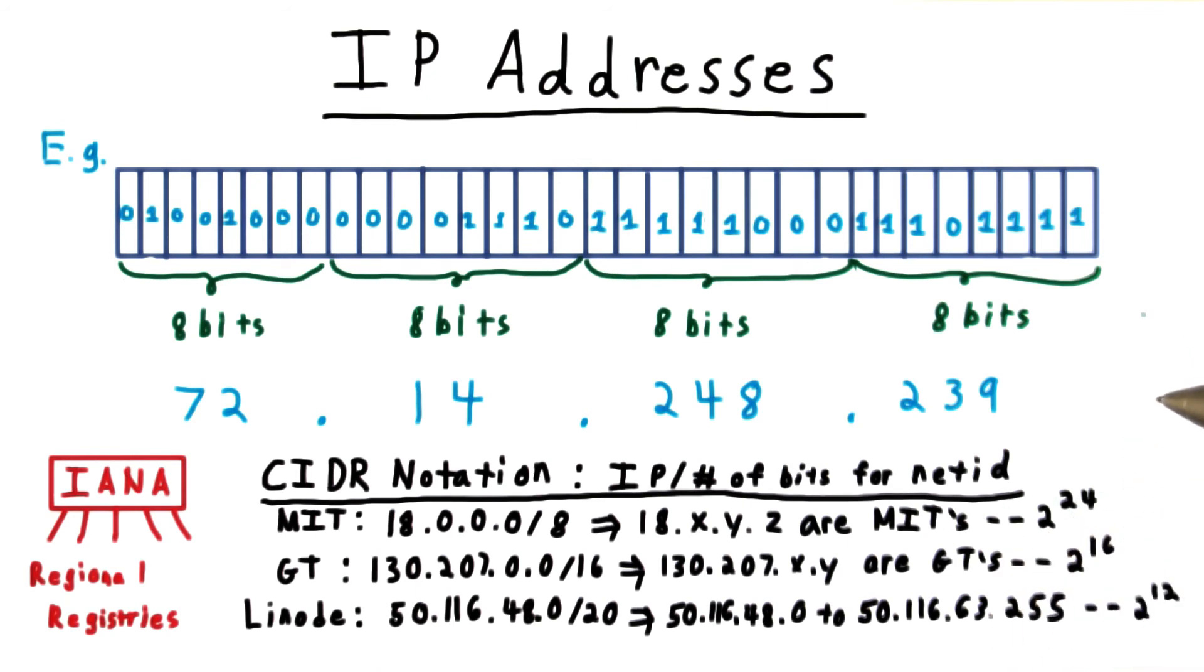One solution to this problem is simply to expand the address space to use more bits. The new internet protocol called IPv6, the old one is called IPv4, uses 128-bit IP addresses. The problem is that IPv4 is so universal and so many other systems depend on it that adoption of the new protocol has been slow. I encourage you to read more about this on your own.